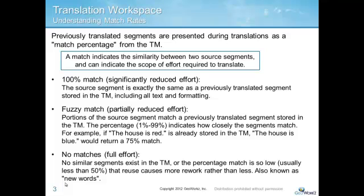For example, you may have already translated the segment 'the house is red.' If you then need to also translate the segment 'the house is blue,' you would be presented with something around a 75% match. At that point, you would only need to replace the translation for red with the translation for blue to complete the translation. A zero or no match means that no similar segments exist in your TM. The idea behind a CAT tool is that you gradually build up the translated content stored in your TM, so that each subsequent translation project can benefit from your past projects.